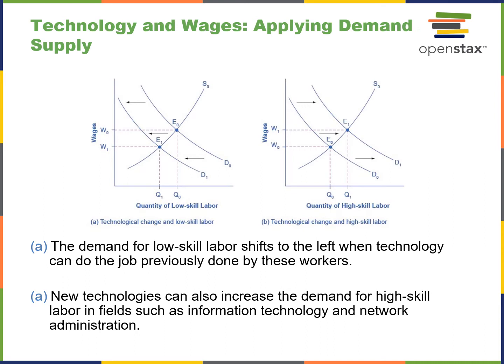Looking at technology, wages, and applying demand and supply: in Graph A, you have a shift of the demand curve going to the left. When technology can do the job previously done by workers — for example, robots reducing the demand for physical labor — that demand shifts left. At the same time, robots reducing low-skilled labor means the demand for high-skilled labor goes up, because you need people to fix and program those robots.